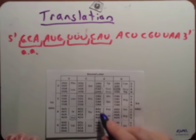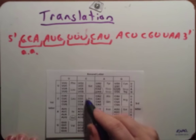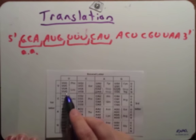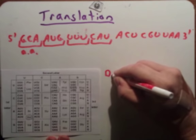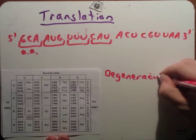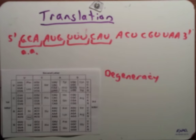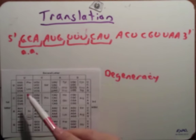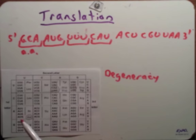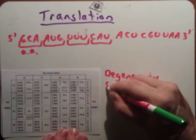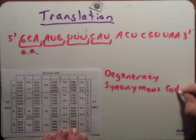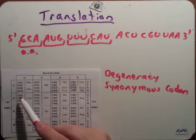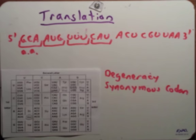Some other features of the code: you'll notice multiple codons — in this case two, A-A-U and A-A-C — coding for asparagine. You'll notice these four here coding for proline, and these six coding for leucine. The fact that we have multiple codons coding for the same amino acid is called degeneracy — we say the code is degenerate. Another way to say that is that these codons, like all the leucine ones, are synonymous codons. The codons look different but code for the same amino acid.